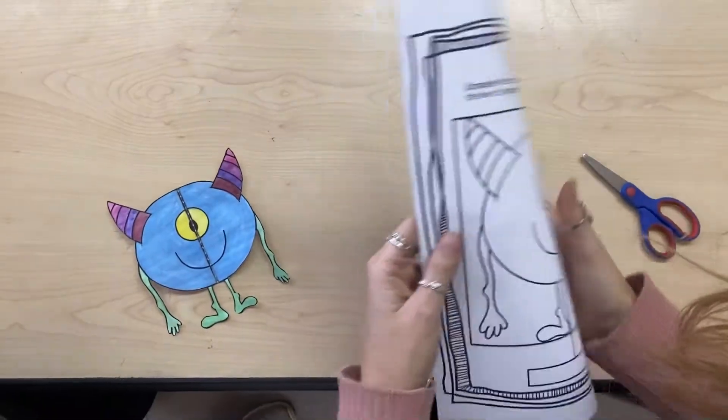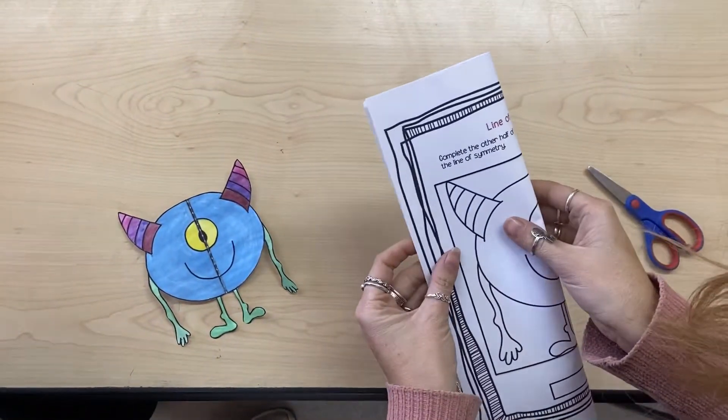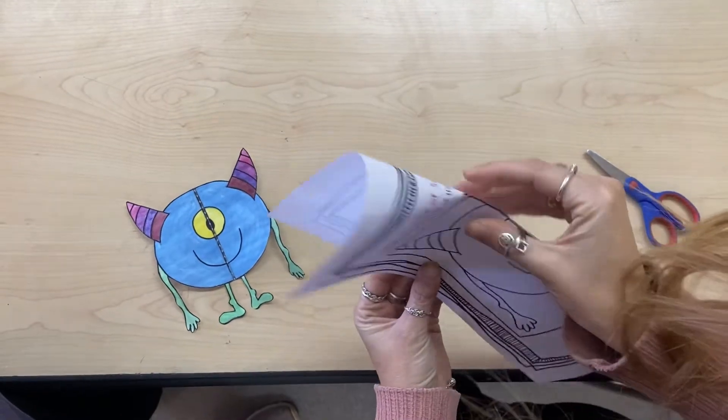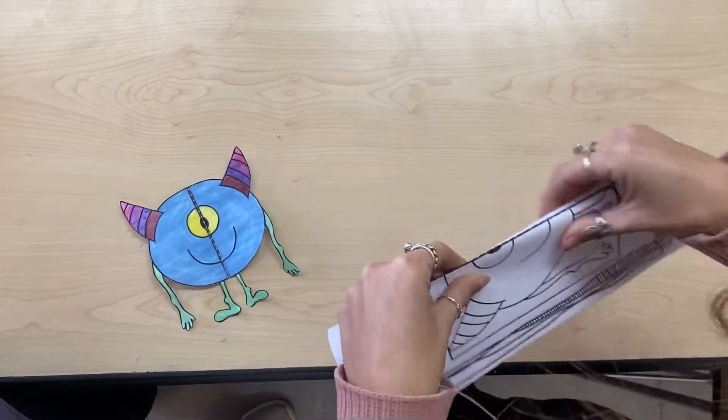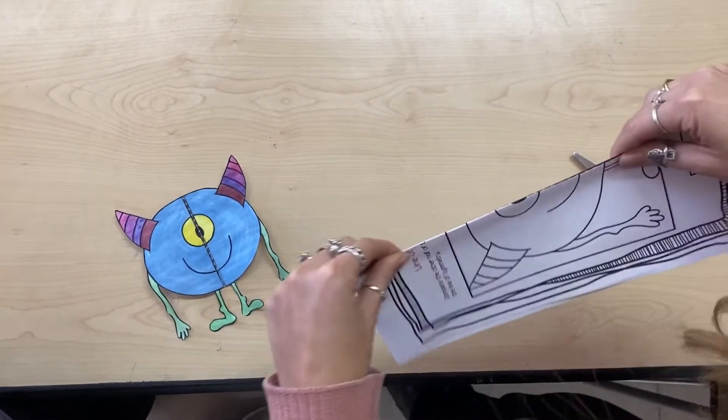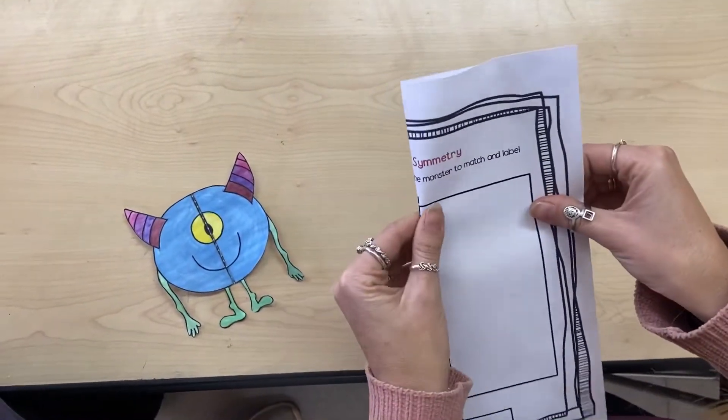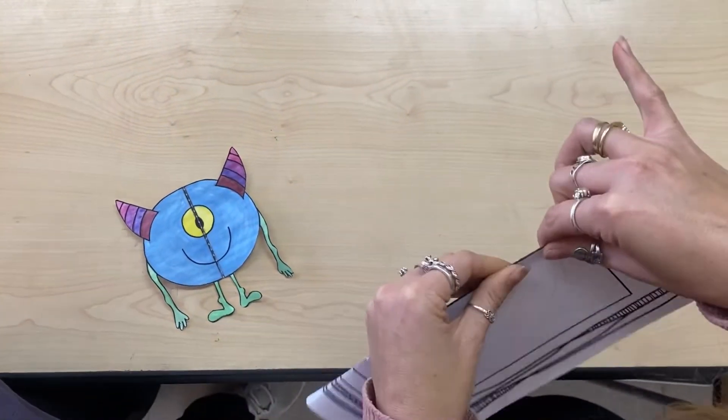Okay boys, so Mr. G and I are just going to show you something just in case you're struggling to get the monster symmetrical. I'm going to fold this monster in half like this. Make sure you fold him nicely, properly in half.